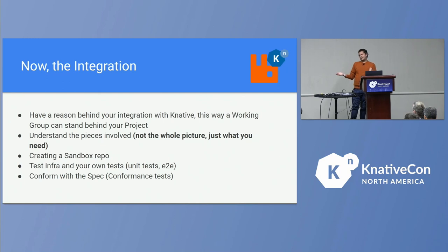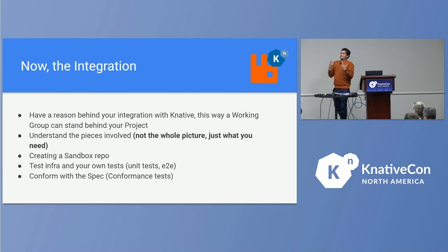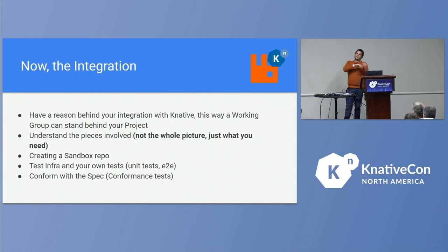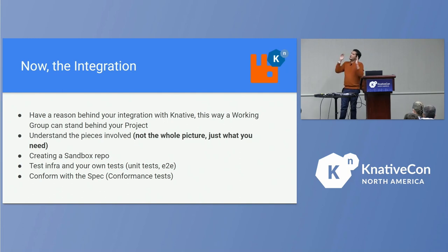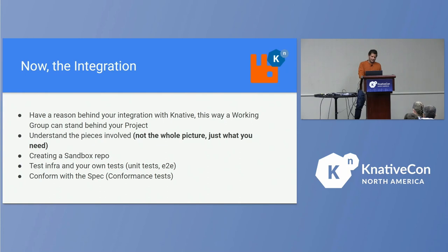Finally, there are conformance tests. If you recall, I mentioned specifications or specs. Conformance tests are the way to tell Knative that your specification is being respected by your implementation. Basically, if you have a specification of a broker with a function that must return something greater than zero to be correct, a conformance test checks that — if your function returns greater than zero, your conformance is passing. Otherwise, you are not respecting the specification of that specific implementation.